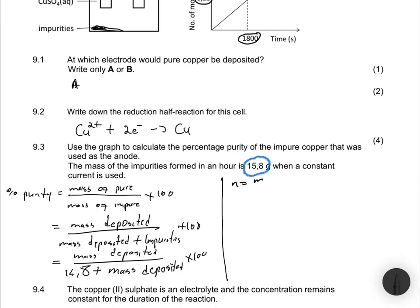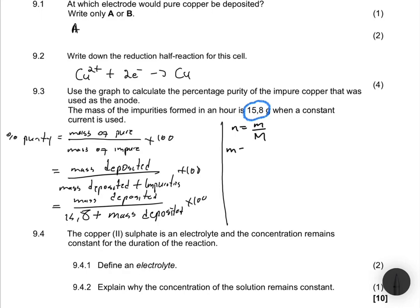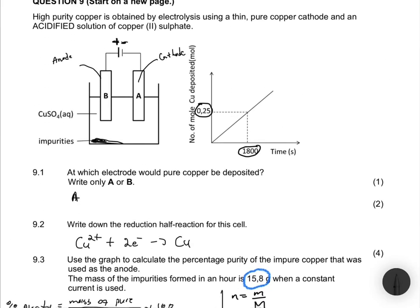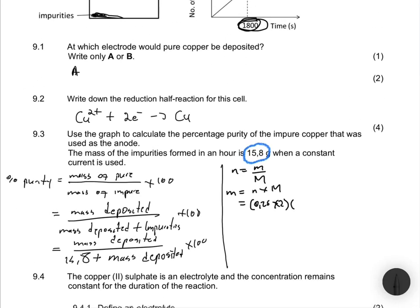Using n = m/M, we rearrange to find mass = n × M. The number of moles in an hour is 0.25 × 2 = 0.5, since we were given moles in 30 minutes and want moles in an hour. The molar mass of copper is 63.5, so mass deposited = 0.5 × 63.5 = 31.75 g.